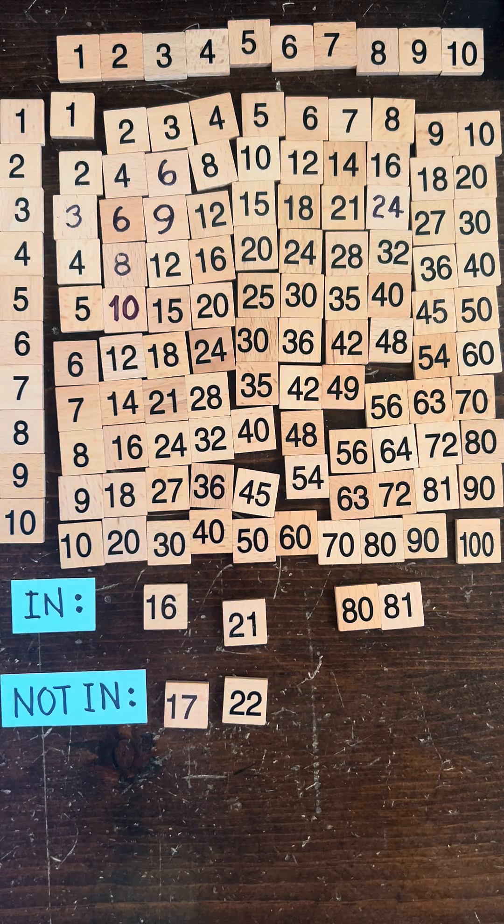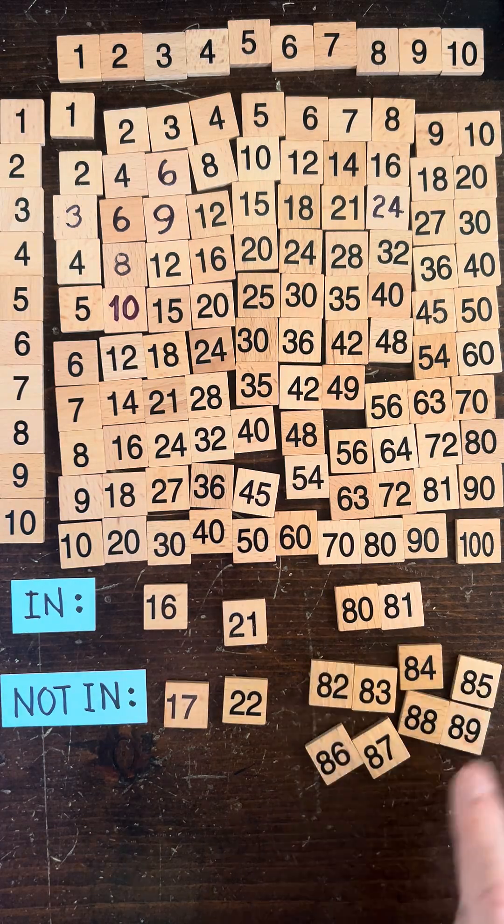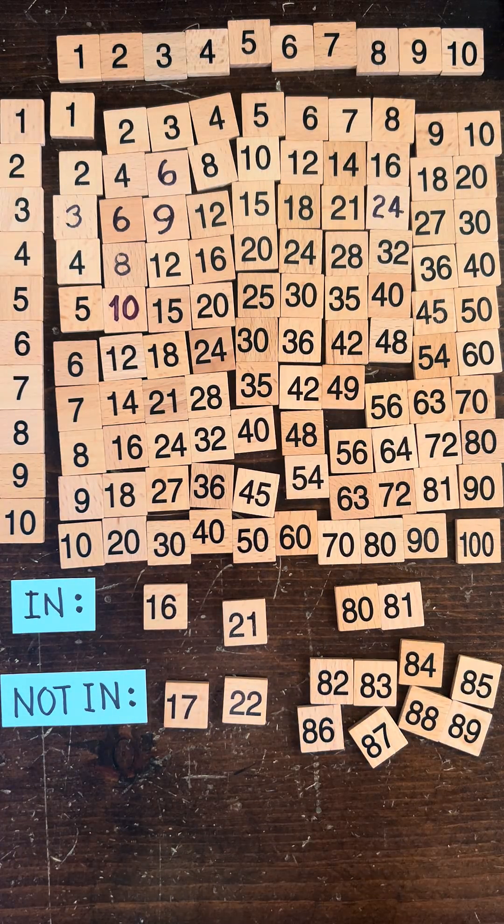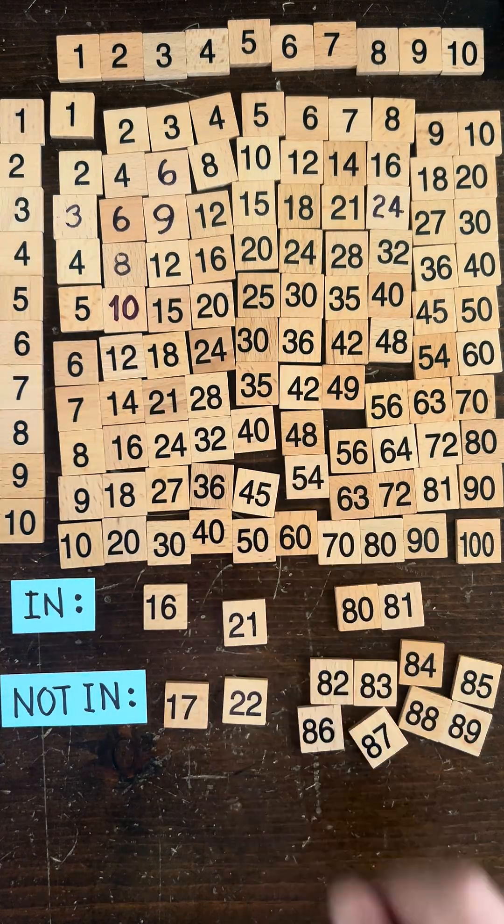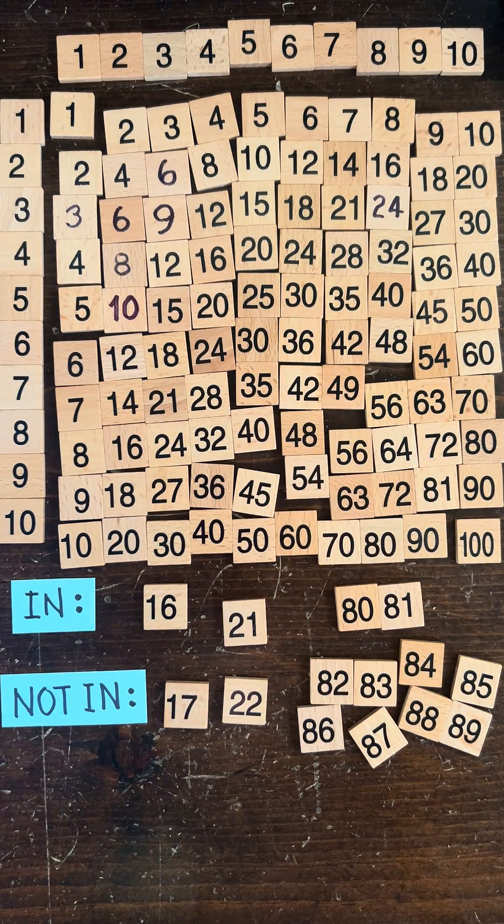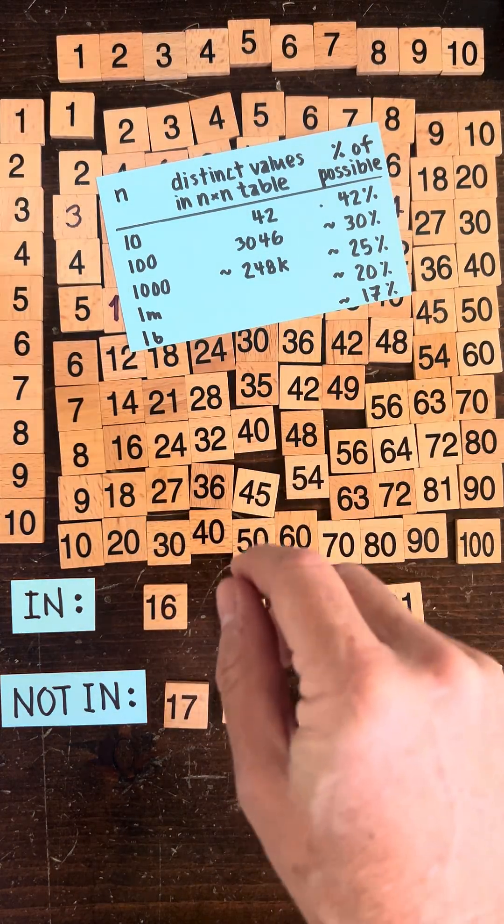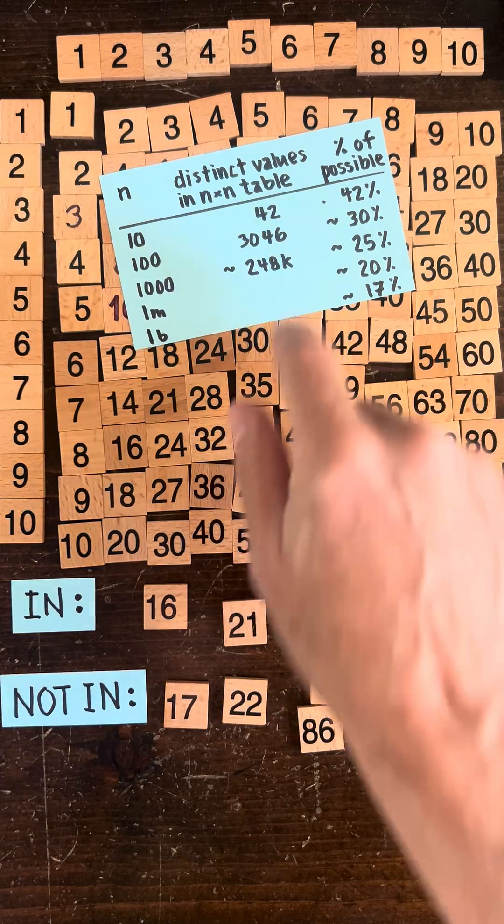80 and 81 are there, but none of the other numbers in the 80s show up in the table. The answer is there's 42 distinct values, that is 42 percent of all the possible numbers between 1 and 100 actually show up.